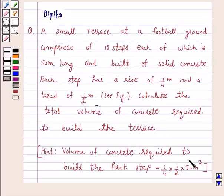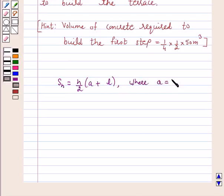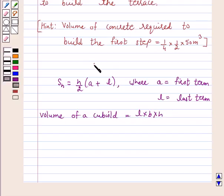Hint: volume of concrete required to build the first step is equal to 1/4 × 1/2 × 50 cubic meters. The key ideas are: the sum of first N terms of an AP, S_N = N/2 × (A + L), where A is the first term and L is the last term. Also, volume of a cuboid is equal to L × B × H.